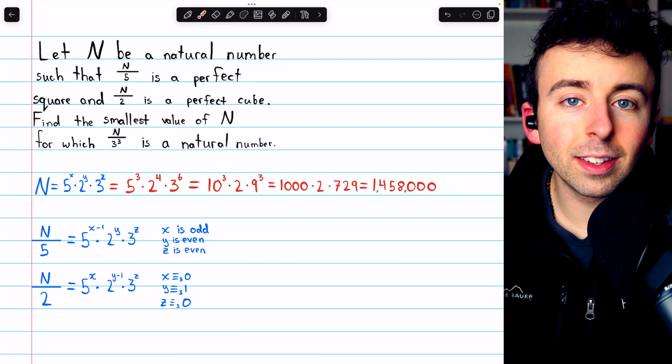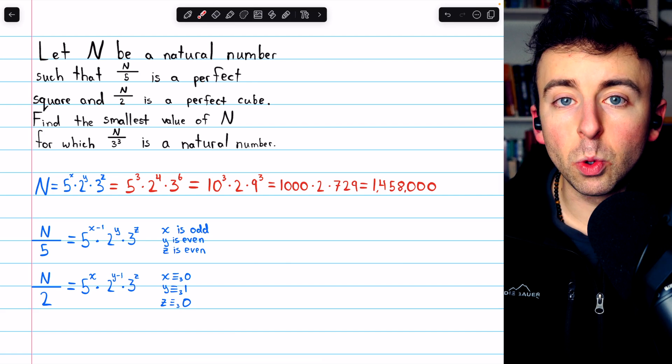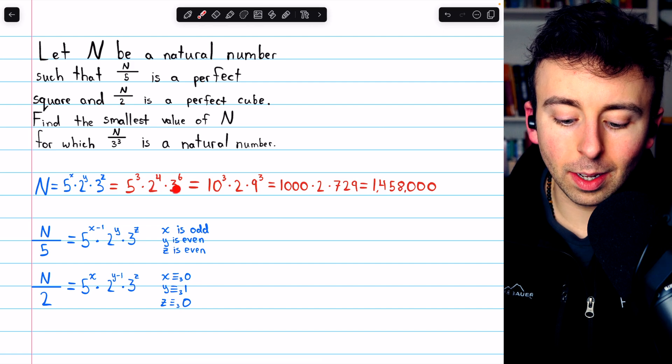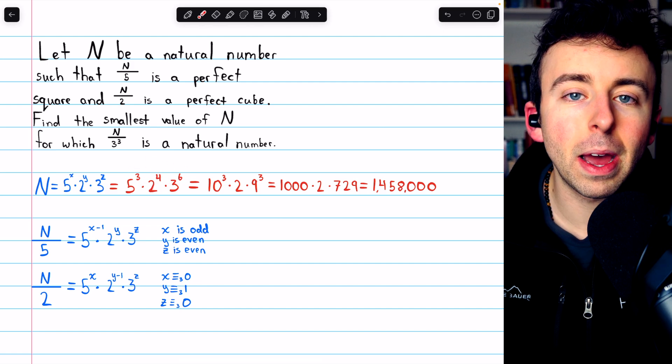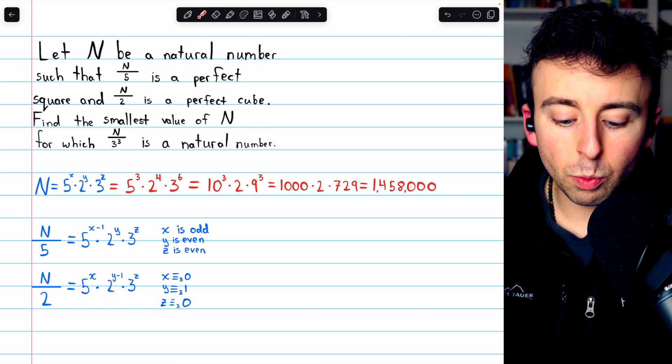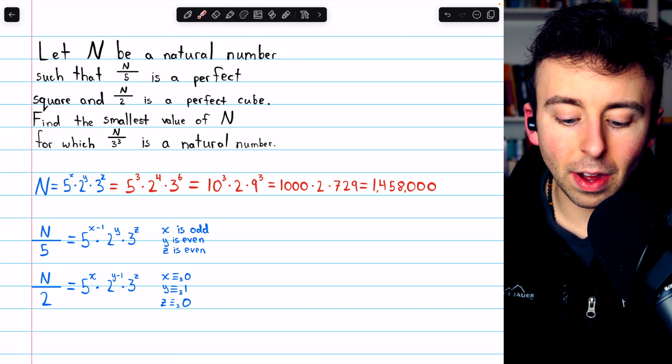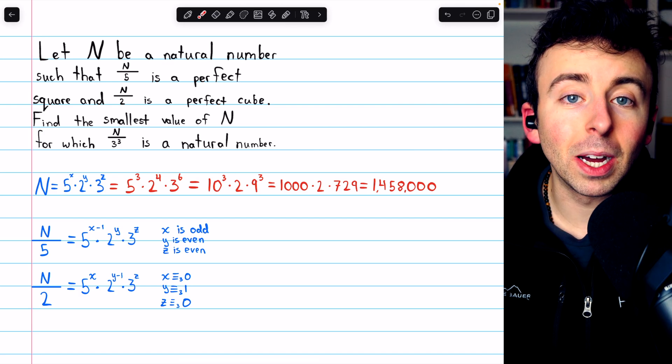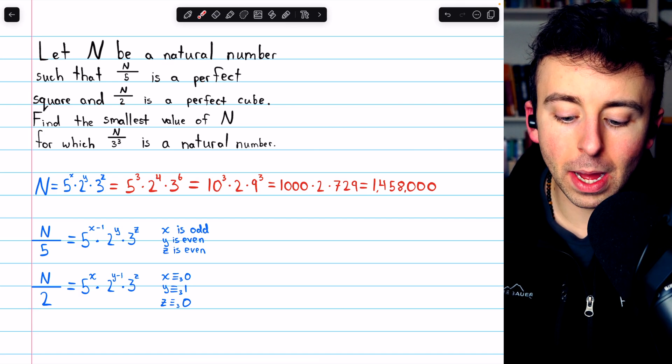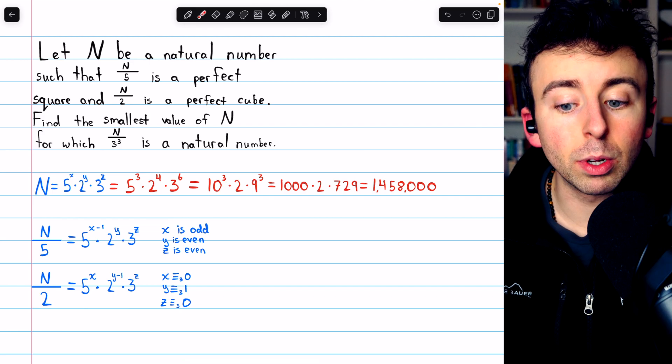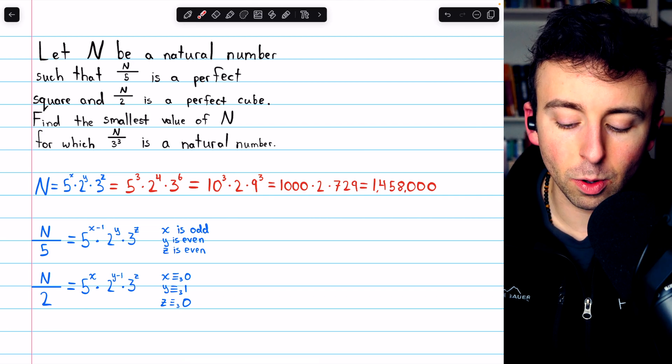So here's our answer, and all that's left is to talk about how to compute it without expending too much effort. 5 to the 3 times 2 to the 4 times 3 to the 6. These are the smallest the powers can be while fitting all the criteria of the problem. Notice we can pair up 3 factors of 5 with factors of 2 to get 10 to the 3, but that leaves 1 factor of 2 behind. 3 to the 6 is the same as 3 squared cubed, and 3 squared is 9, so that's 9 cubed.